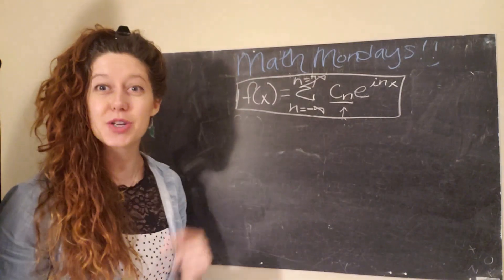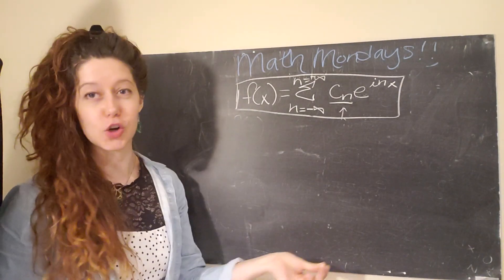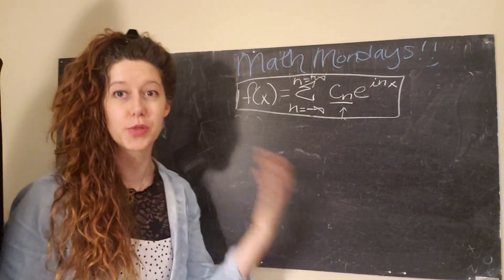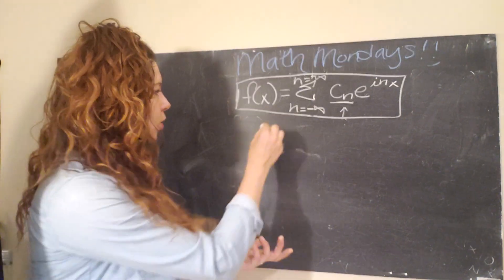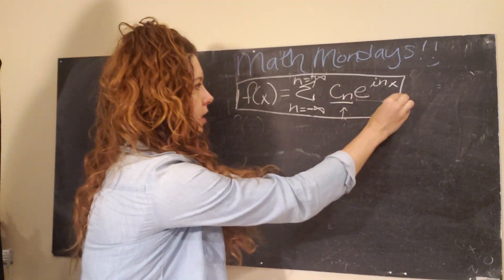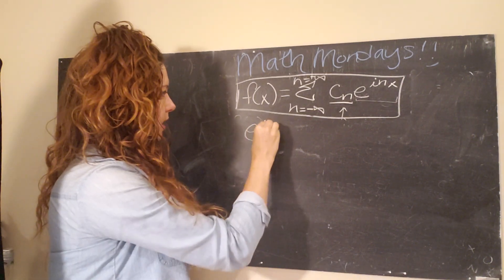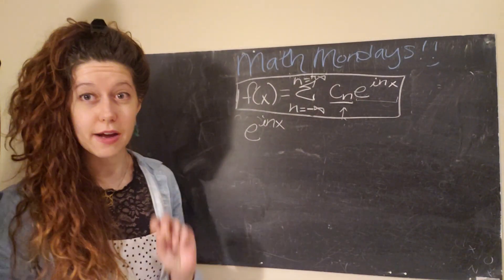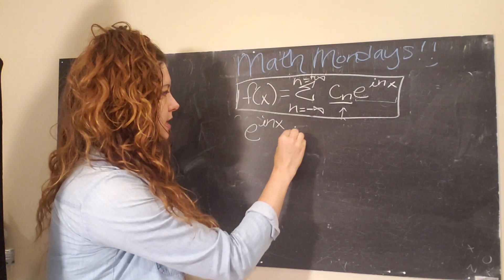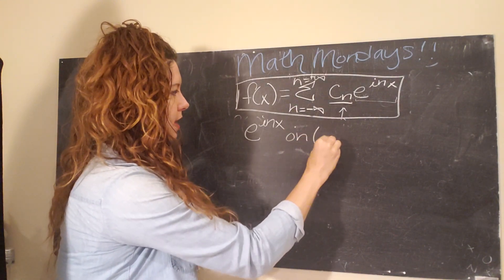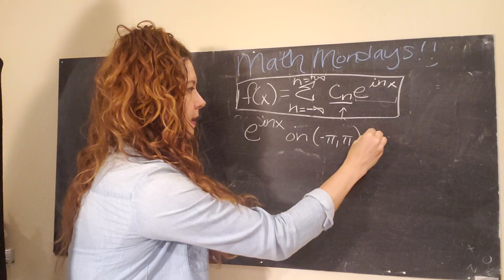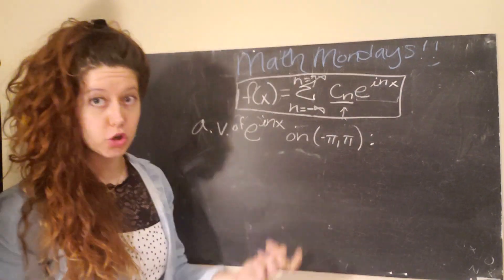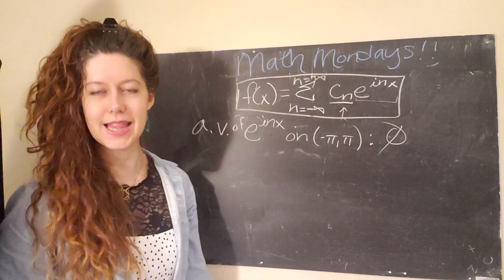So all of that is to say, the coefficients are very important. So we need a way to find them. And this is actually where we get to bring back the average value function that we used in the sine and cosine Fourier series to find the coefficients of both the sine and the cosine terms. So in this case, we have a function of the form e to the inx, and it's a little bit hard to plot. I would definitely recommend looking it up, but basically what we find is that on the interval of negative pi to pi, the average value of this function is zero.